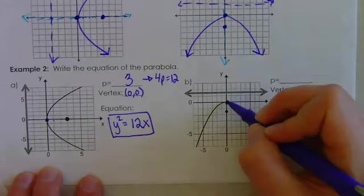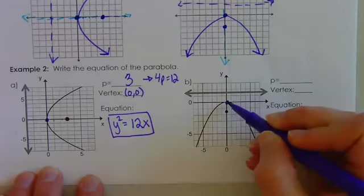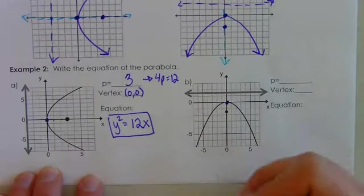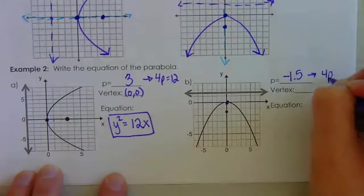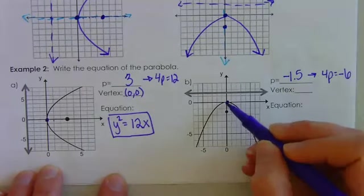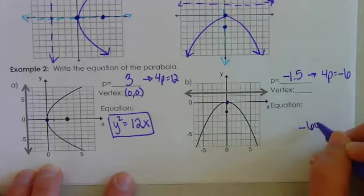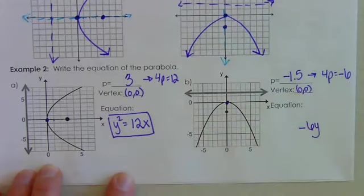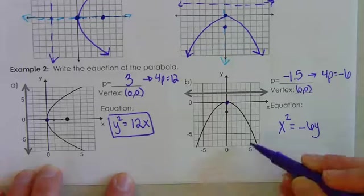If a point is in between two grid lines, we assume it's at 0.5. Here the P value is going down 1.5. Since it's opening down, P is going to be negative — negative 1.5. So 4P is negative 1.5 times 4, which is negative 6. Because that P value is in the y direction, P and y are BFFs, so we put that value with the y. If P is with y, the other variable — x — is what's squared.